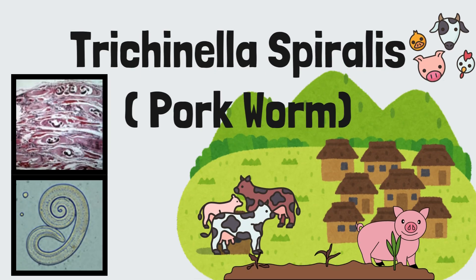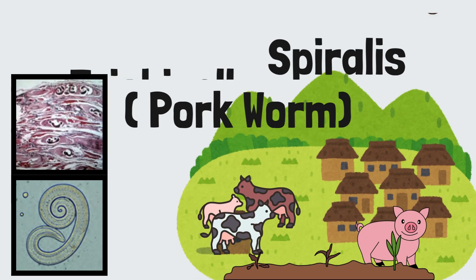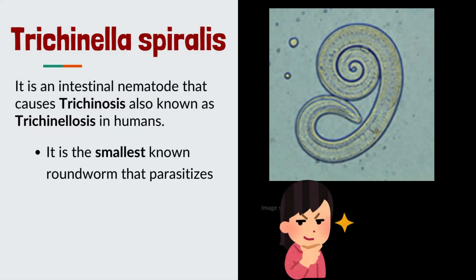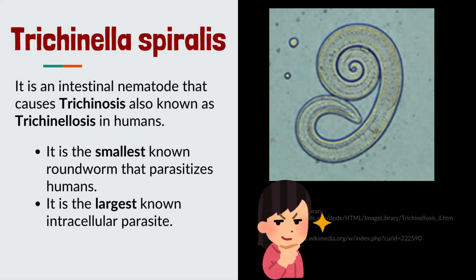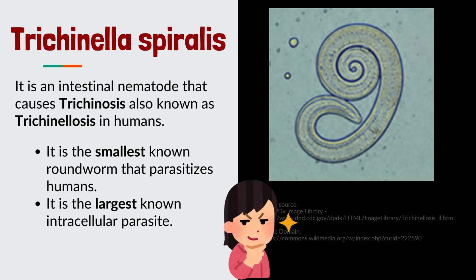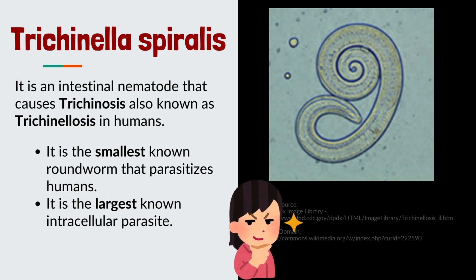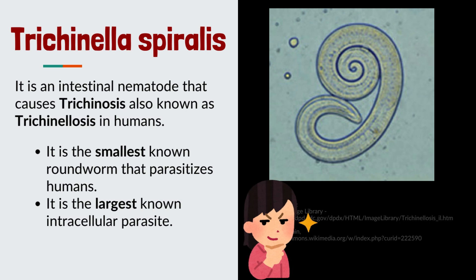Trichinella spiralis, also known as pork worm. What is Trichinella spiralis? It is an intestinal nematode that causes trichinosis, also known as trichinellosis in humans. It is the smallest known roundworm that parasitizes humans, and it is the largest known intracellular parasite.